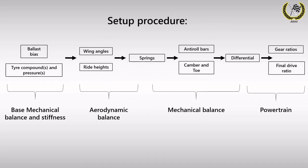Looking at the theoretical model for vehicle setup procedure that was previously introduced, you can see how ride height tuning is the final crucial step to tuning the aero balance, with springs being a supporting element. Spring tuning also bridges the gap between aero balance optimization and mechanical balance adjustment.